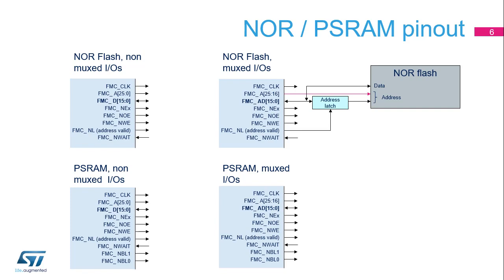The latch-enable signal is provided by the FMC through the FMC-NL output pin. This signal is named address-valid (NADV) on SOMNOR Flash devices. FMC-NEX is one of the four chip-select signals, one per subbank. Regarding the PSRAM interface, the FMC accesses the right data through its byte-lane signals FMC-NBL0 and FMC-NBL1.